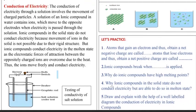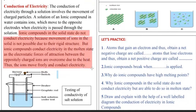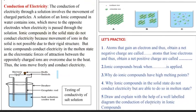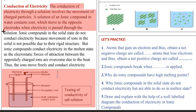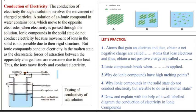Question 4: Why do ionic compounds in the solid state not conduct electricity but are able to do so in the molten state? I have already explained this, so you can write the answer. Question 5: Draw and explain with the help of a well-labeled diagram the conduction of electricity in ionic compounds. You have to create this diagram and write the whole process of conduction of electricity. This will be your answer 5.